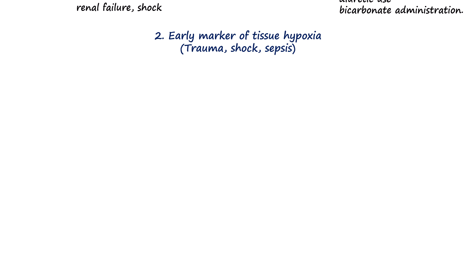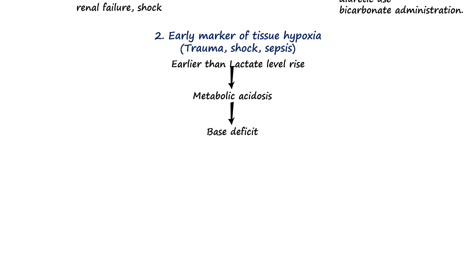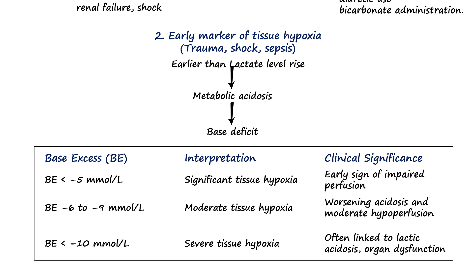When oxygen delivery fails, tissues shift to anaerobic metabolism, producing lactic acid and causing metabolic acidosis. Lactate levels may take time to rise and depend on liver and kidney clearance, so they can be normal early in shock. In contrast, base excess calculated from pH, CO2, and bicarbonate reflects the total acid load immediately, reflected as negative base excess or base deficit. In clinical practice, the base excess level that suggests shock or tissue hypoxia is typically less than negative 5 mmol/L.